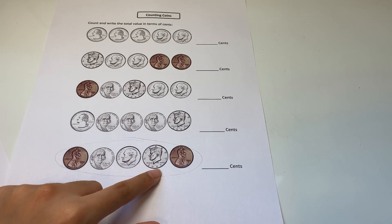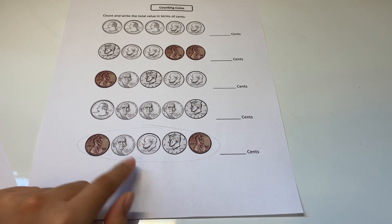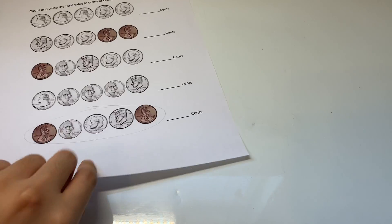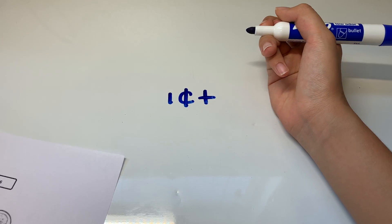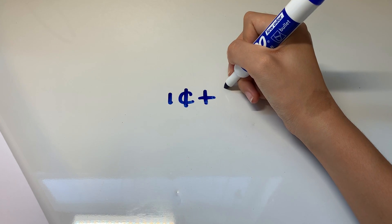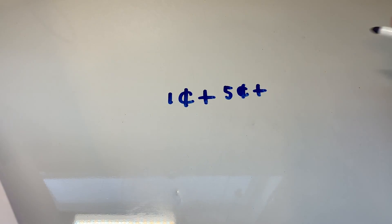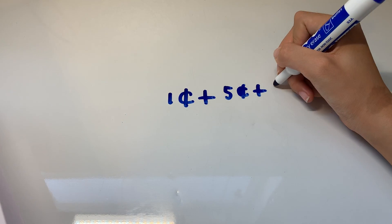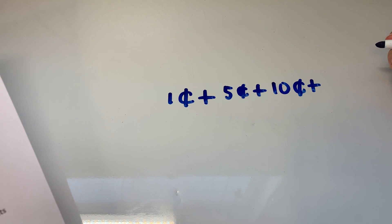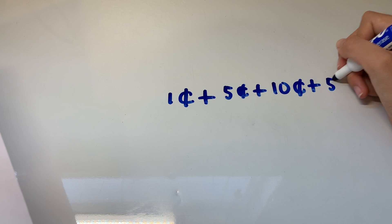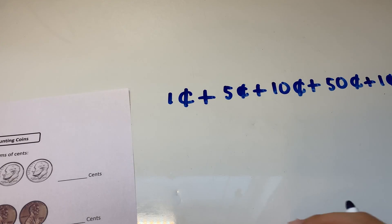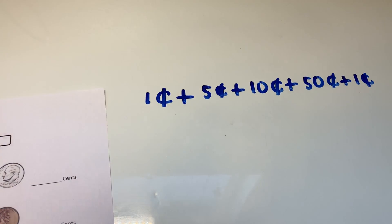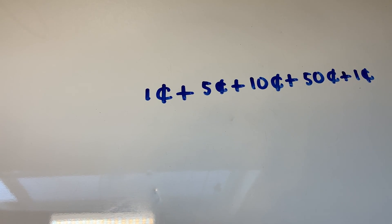The penny is just one cent. So one cent. And then we want to add it to the nickel, which is five cents. And then you want to add it to the dime, which is 10 cents. And then we want to add it to the half dollar, which is 50 cents. Because a dollar is a hundred cents and half dollar is half of a dollar, which means it's 50 cents. And then there's another penny. So we just add one cent.